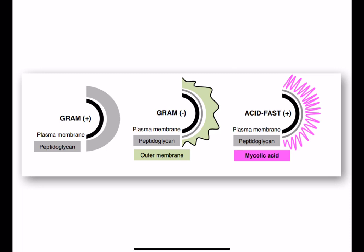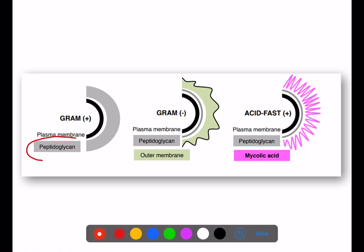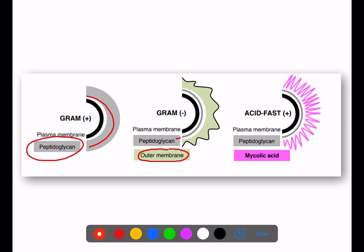Here is a comparison of gram positive, gram negative, and acid fast bacteria. Gram positive bacteria have a thick peptidoglycan layer, gram negative bacteria have a thin peptidoglycan layer plus an important outer membrane, and acid fast bacteria have a high mycolic acid content in their cell wall.